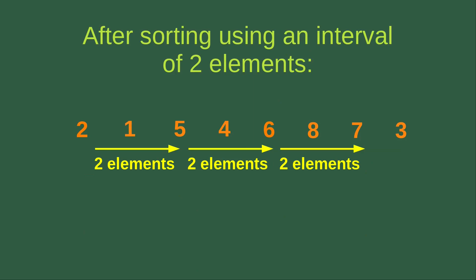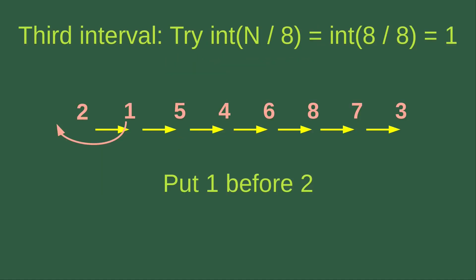After this sorting, the elements in the sorted subgroup are now in the order 2, 5, 6, and 7, and all other values remain unchanged. Now we go to the third interval, which is n divided by 8, taking the integer part. We have 8 elements, so we need to calculate that.